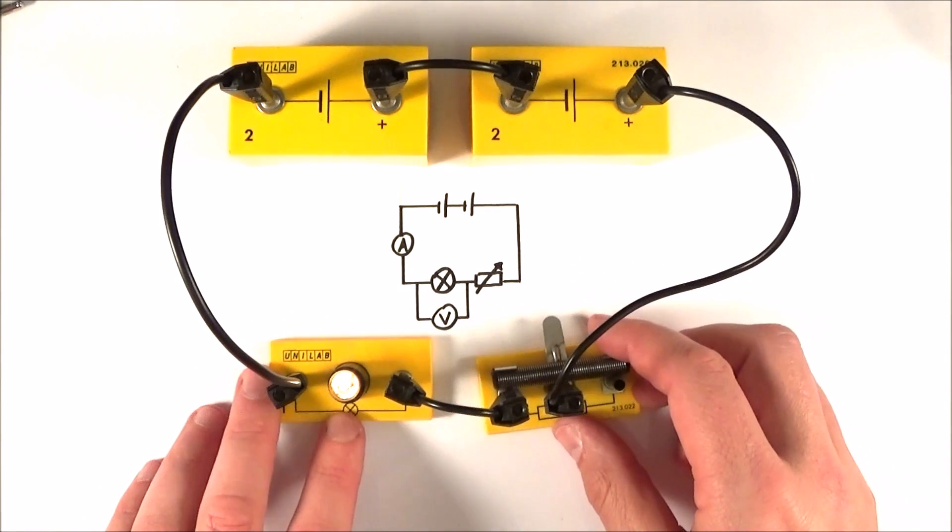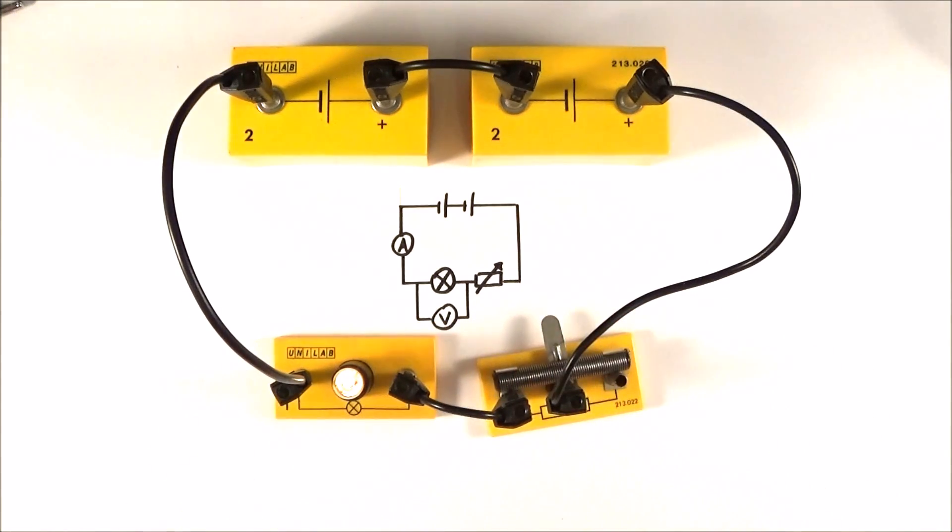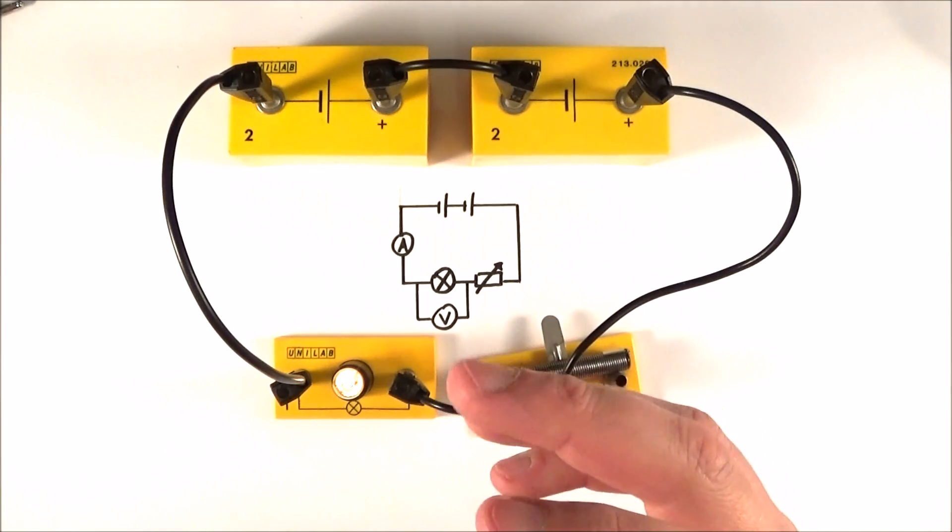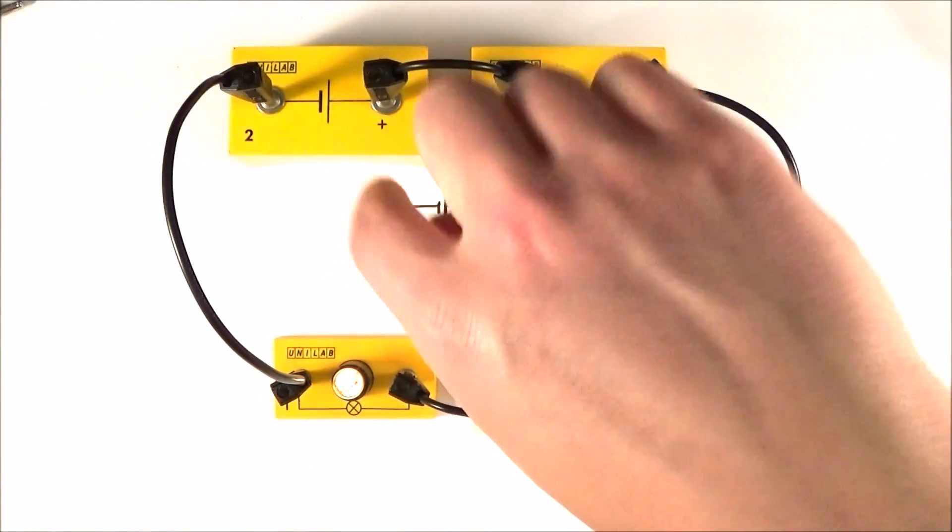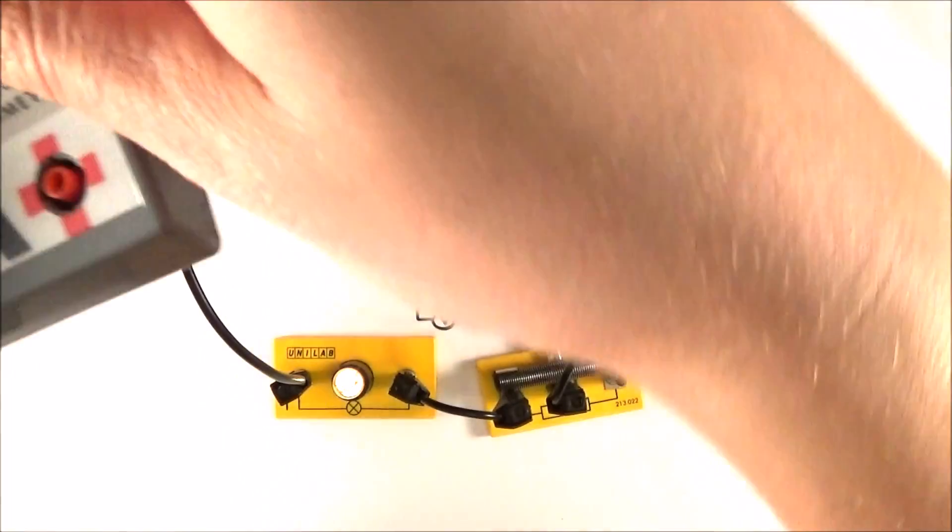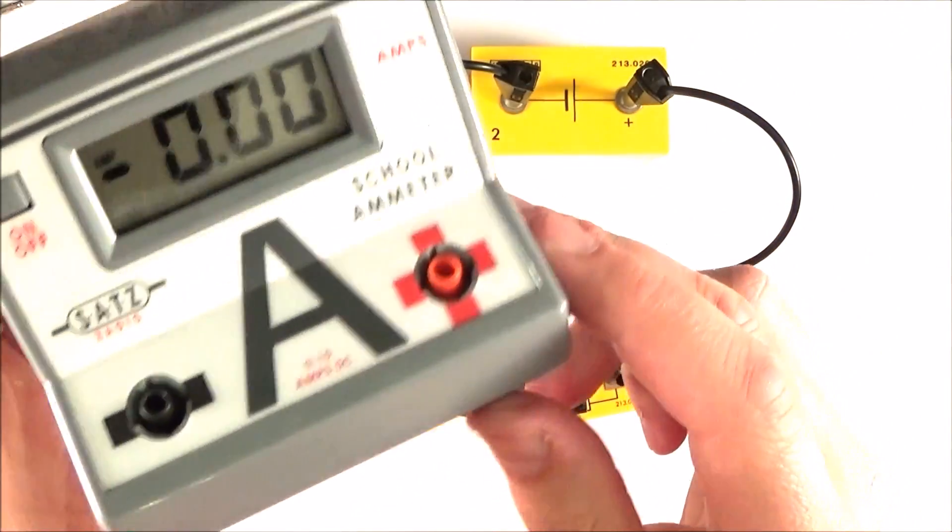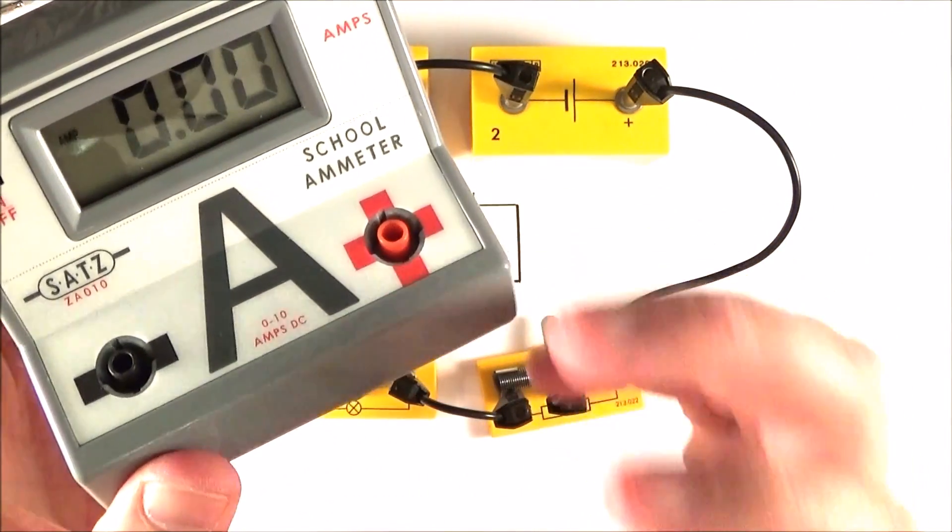So now I know that I have a complete circuit where everything is working, I can start to put in my measuring devices. Now, the first one I'm going to put in is my ammeter. The ammeter is this big device over here, and it must go in series with the components.